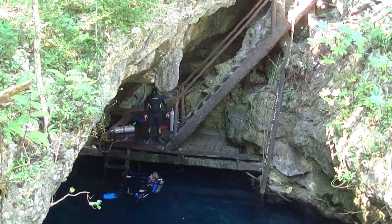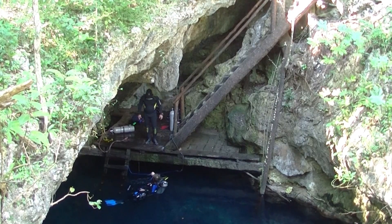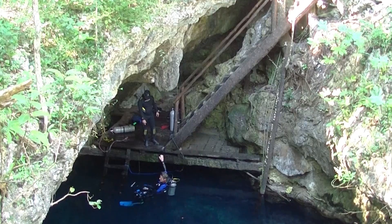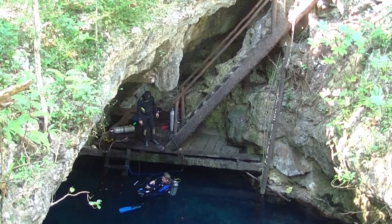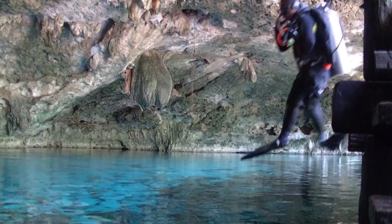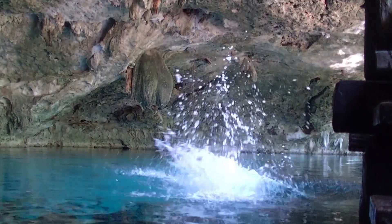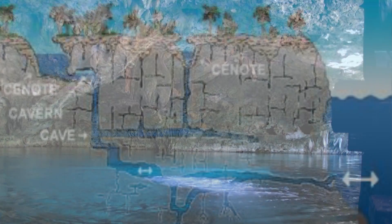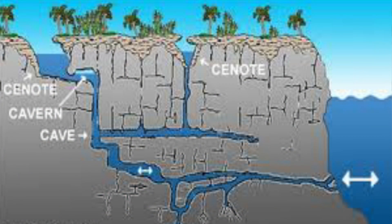Most of the Yucatan is hard limestone with the highest elevation 656 feet above sea level. Rainwater on its return to the sea has broken up gaps in the subsurface, forming cavities, cenotes, and an extensive network of underground rivers.